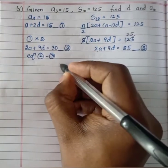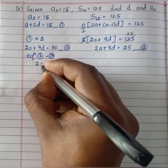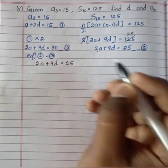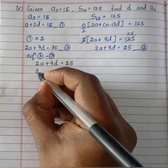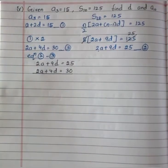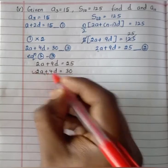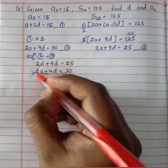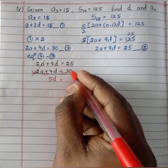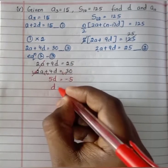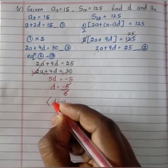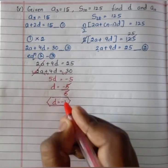Now doing equation 2 minus equation 3: 2a plus 9d equals 25 minus 2a plus 4d equals 30. The 2a terms cancel. 9d minus 4d gives 5d, and 25 minus 30 is minus 5. So 5d equals minus 5, therefore d equals minus 1.